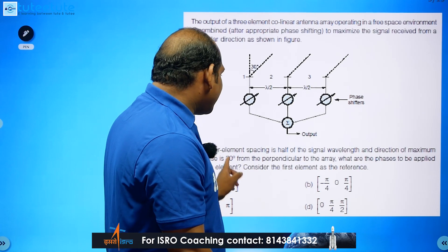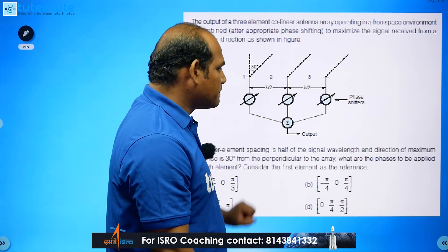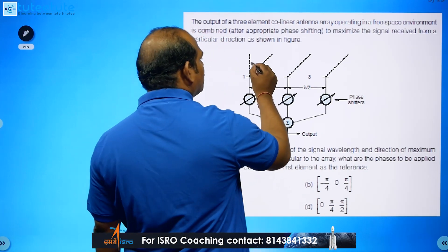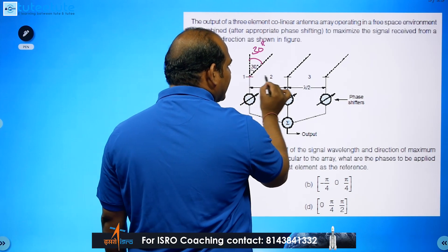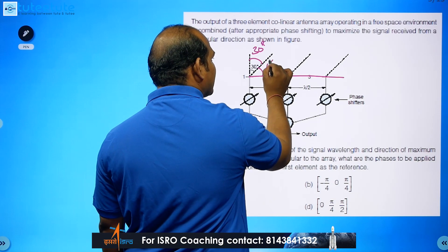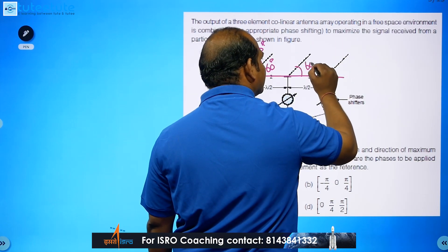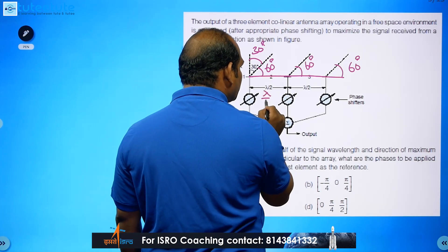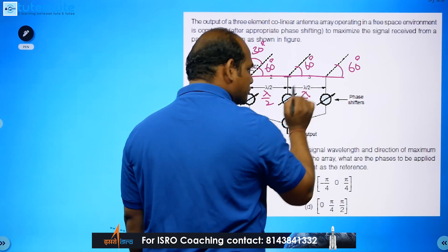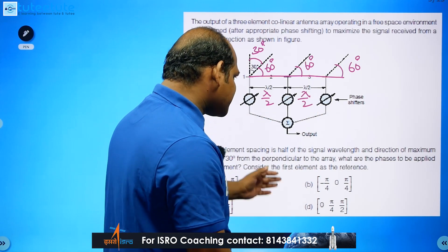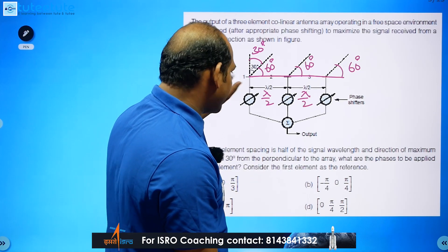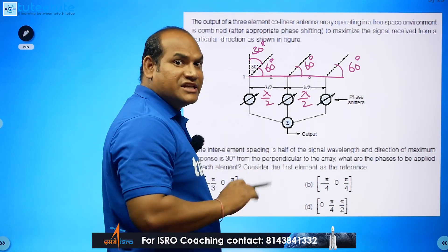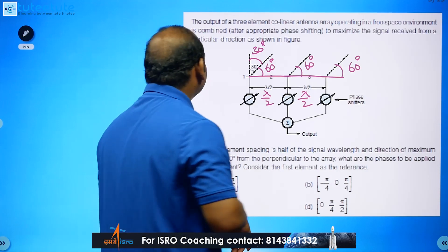Next question on antenna theory: if the inter-element spacing is half a signal wavelength and the direction of maximum response is 30 degrees from the perpendicular to the array, then these parallel lines make 60 degrees. Between elements 1–2 and 2–3 we have λ/2 spacing. We need to find the phase variation between elements 1 and 2, and between 1 and 3.